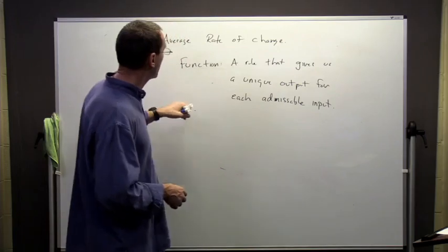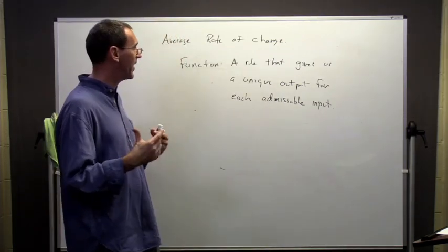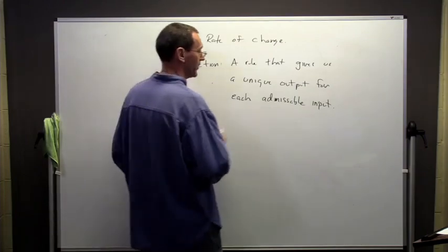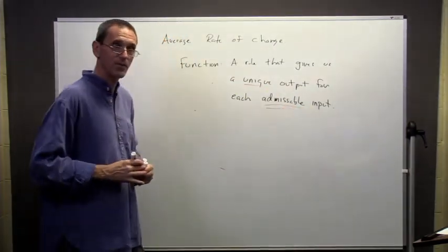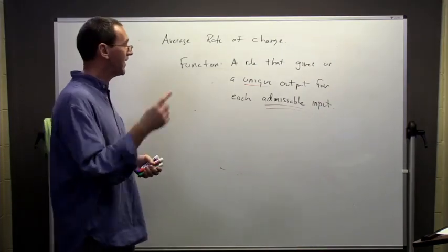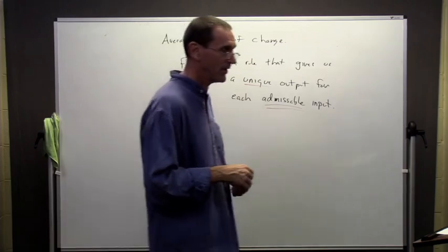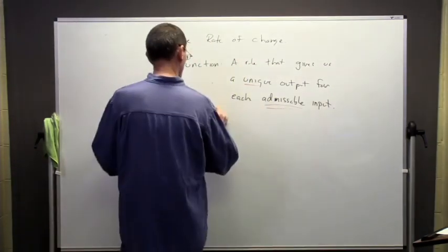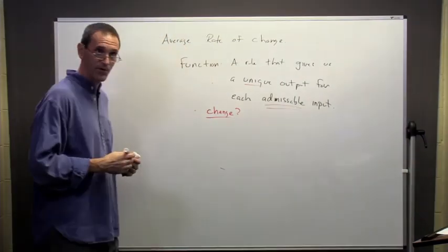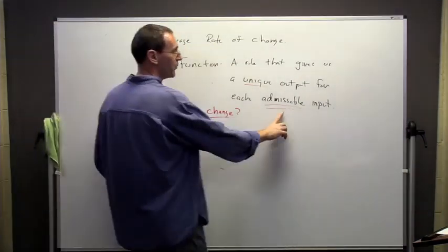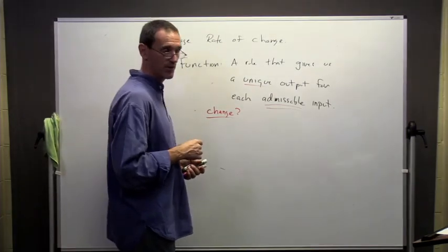Just a quick recap: we have this idea of a function, and a function is a rule that gives us a unique output for each admissible input — that's the key thing. If I give an admissible value, I get one value back. And I want to talk about what happens in terms of change: if I put in a different admissible input, how much does the function change?